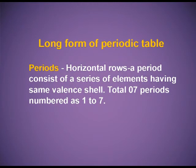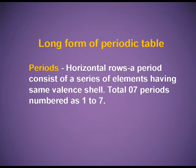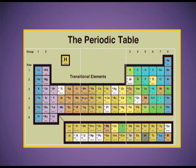The long form of periodic table — periods are horizontal rows, and groups are vertical columns. A period consists of a series of elements having the same valence shell; there are 7 periods numbered from 1 to 7. A group has a series of elements having similar configuration of the valence shell; there are 18 groups. This is the modern periodic table — you can see the 7 periods and 18 groups. Dear students, I hope and I am sure you all have understood the modern periodic table and all those historical attempts which led to its formation. Thank you so much.